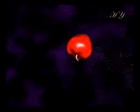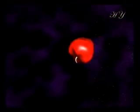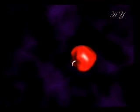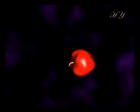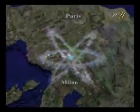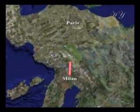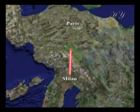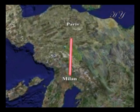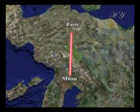Dozens of electrons, in a space far too small to be seen even under the most powerful microscope, revolve around the nucleus in different orbits at the unbelievable speed of 1,000 kilometers a second. That speed is the equivalent of being able to go from Paris to Milan in the space of 1 second.